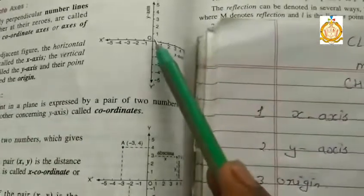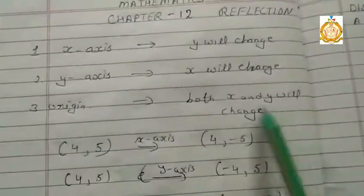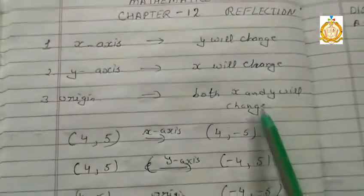Reflection on the origin means both x and y will change. What is the meaning of change? Change means positive becomes negative and negative becomes positive.